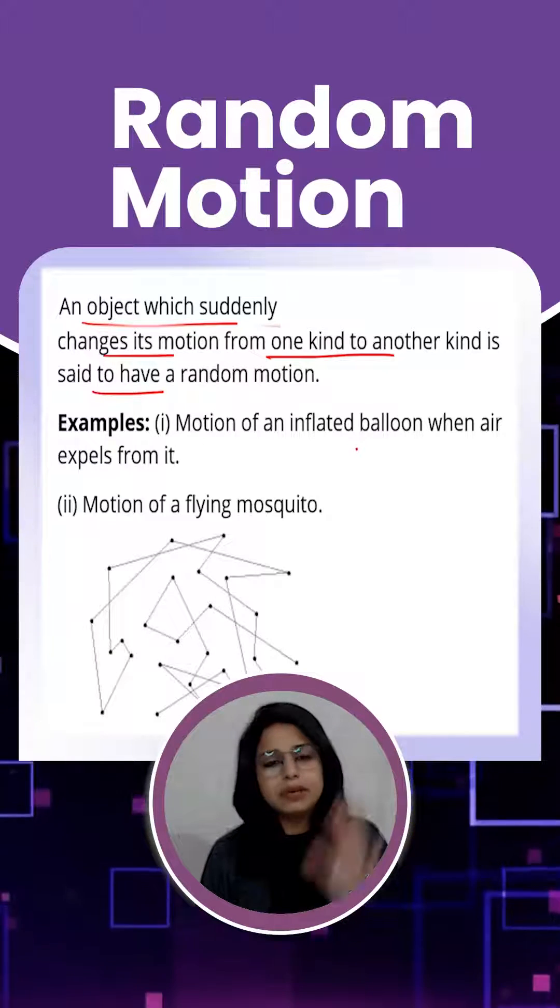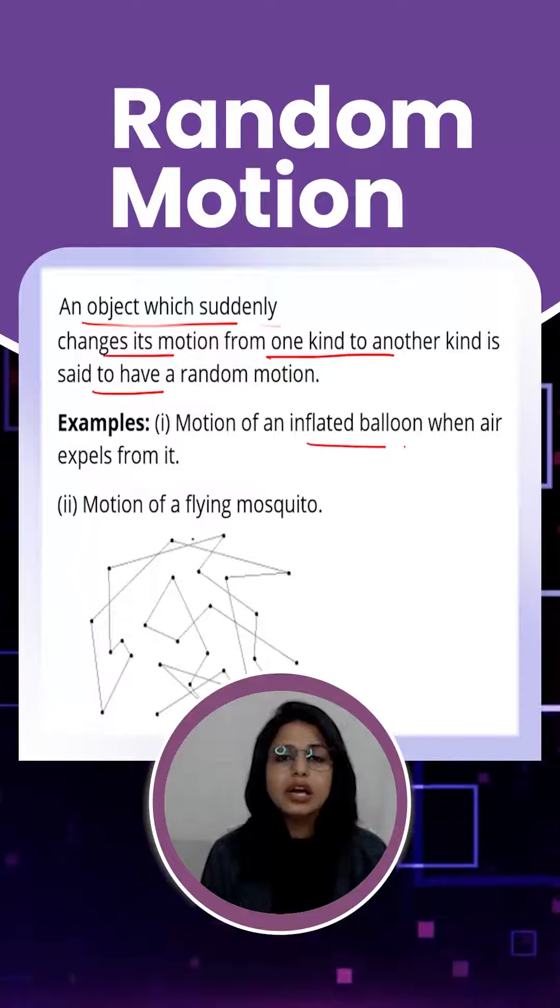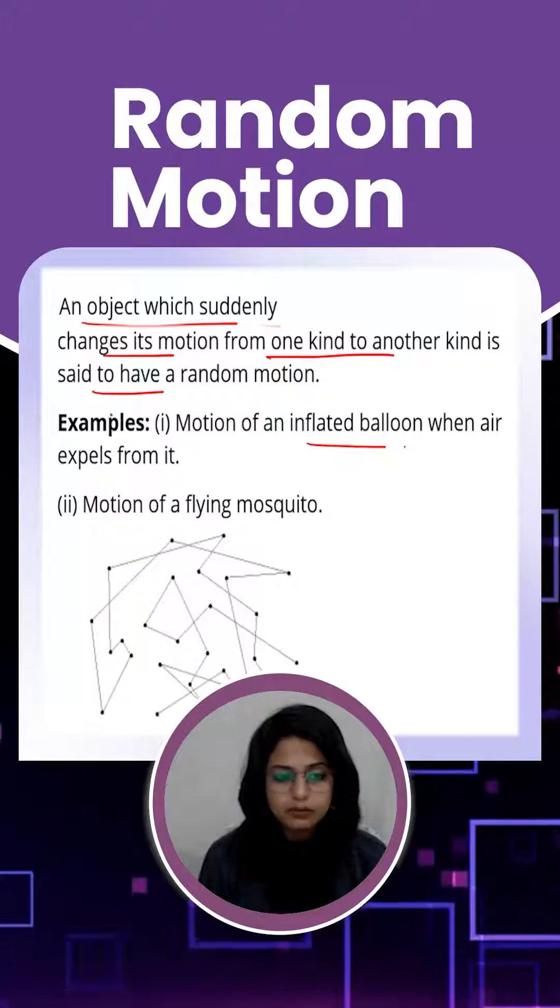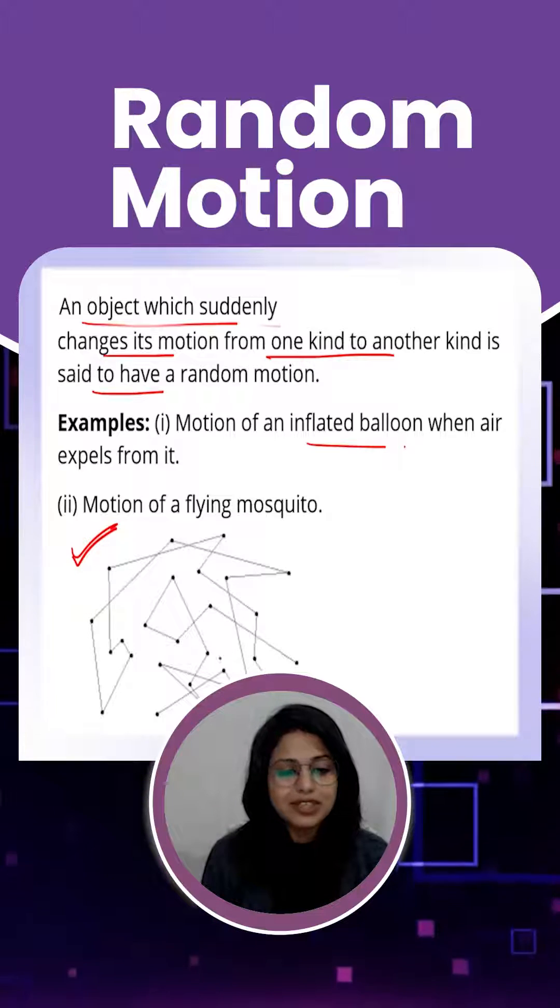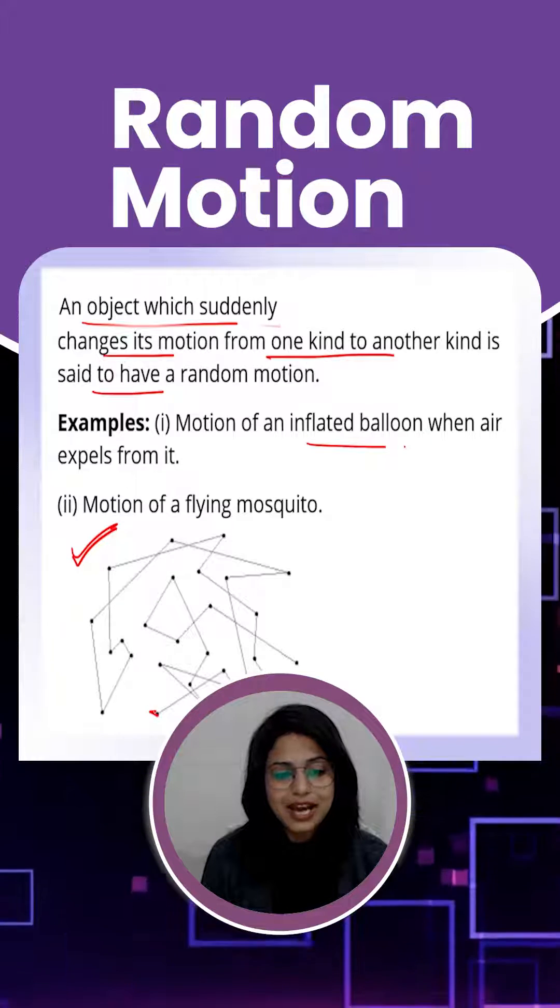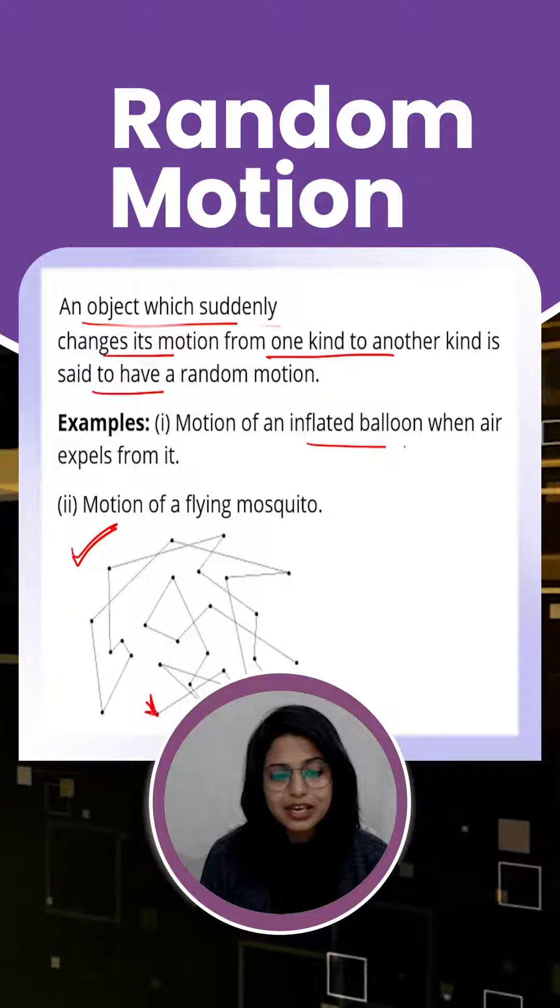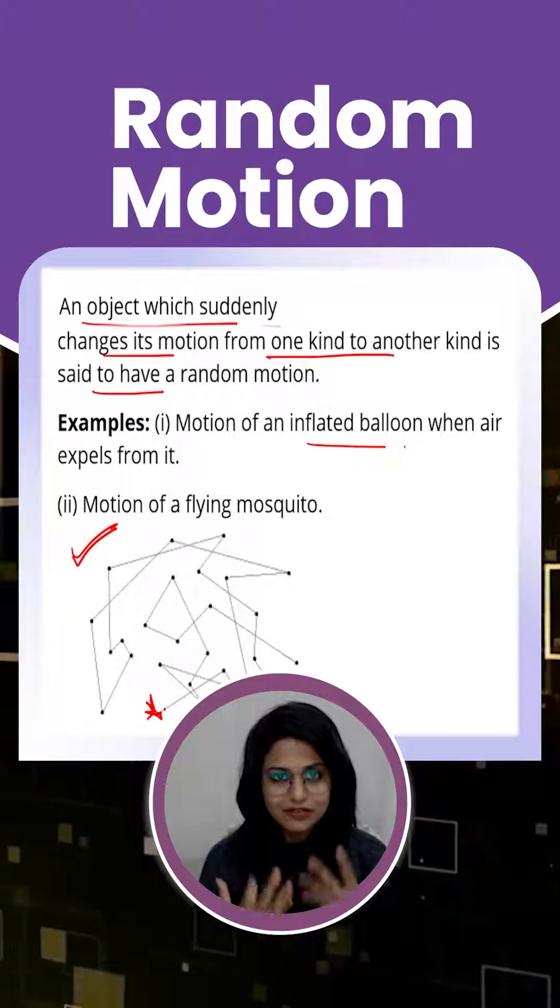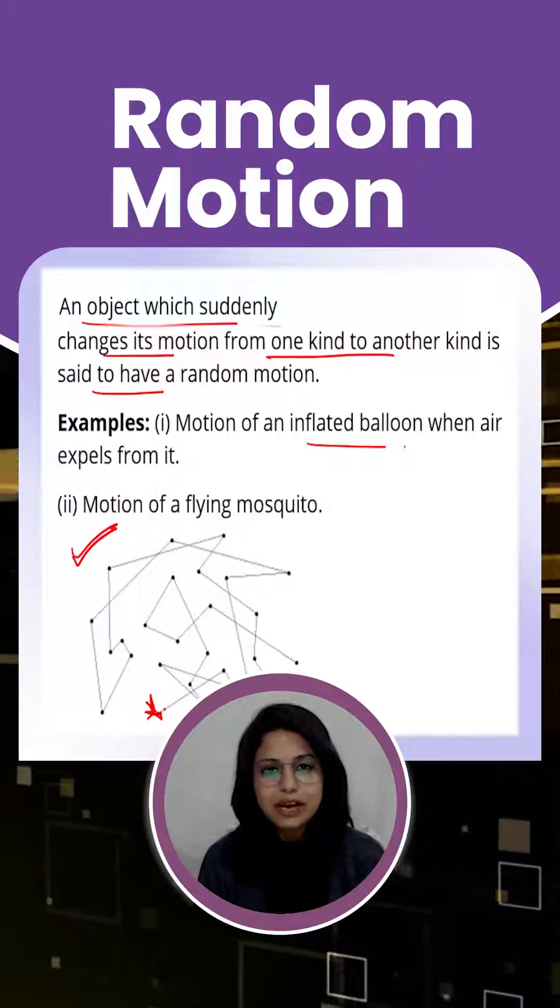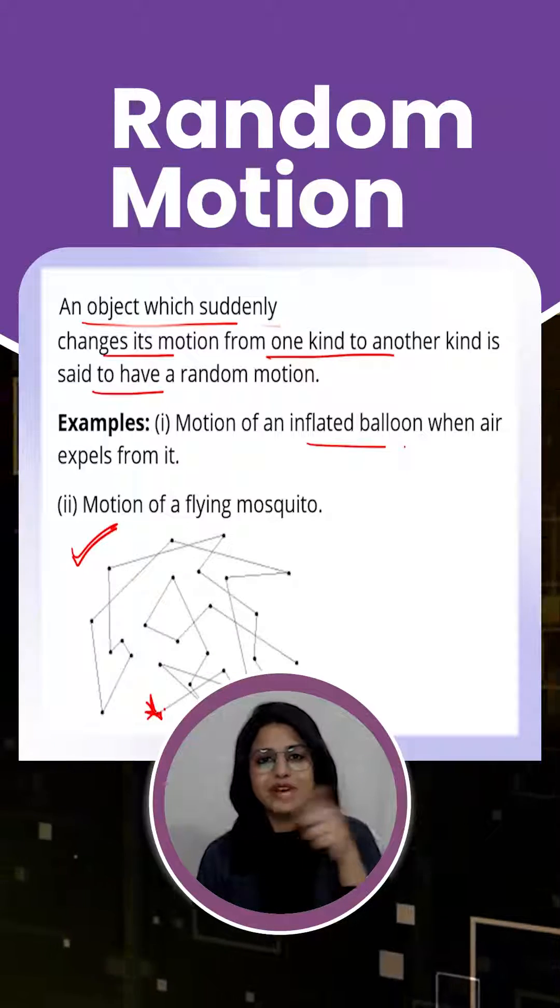A mosquito is also a very good example of this. A mosquito doesn't rest at one place - it keeps on flying here and there in search of blood. It's going to suck blood out of us, so it keeps on flying here and there, making a random motion.